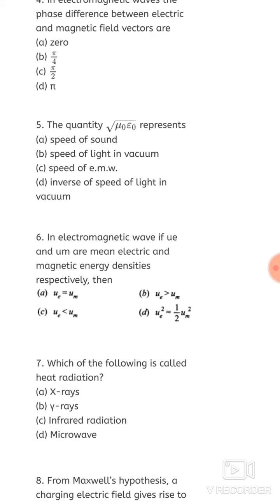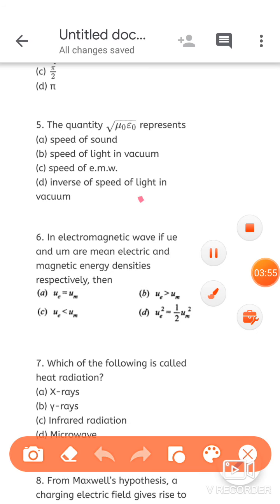The quantity √(μ₀ε₀) represents — as I just told you, this is equal to 1/c. So the correct option is the last one: inverse of speed of light in vacuum.